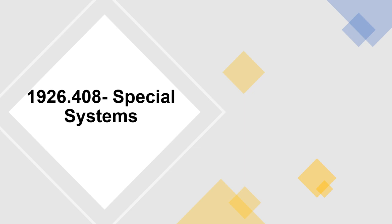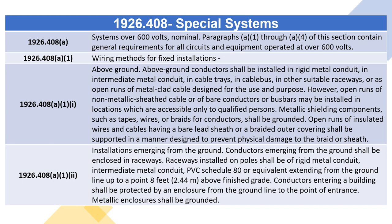1926.408 — Special Systems. 1926.408(A): Systems over 600 volts, nominal. Paragraphs A.1 through A.4 of this section contain general requirements for all circuits and equipment operated at over 600 volts.